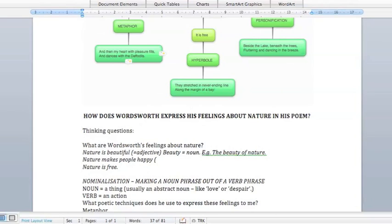So have a look at the second example. The main idea of that sentence is happy, that nature makes people happy. So happy is an adjective, and we change it to the noun, which is happiness. And the phrase becomes the happiness that nature brings.